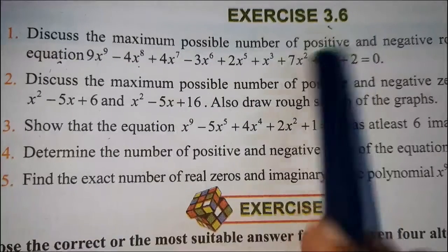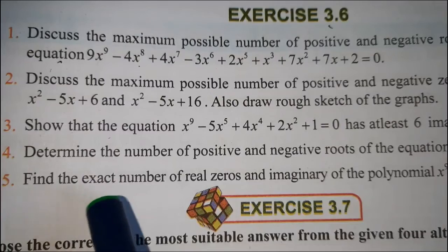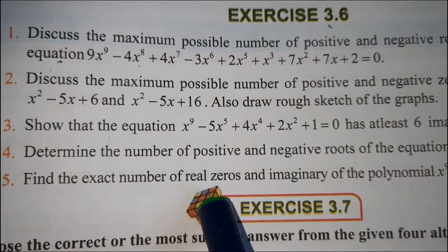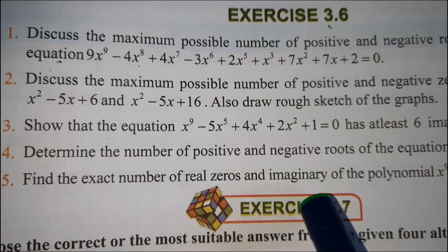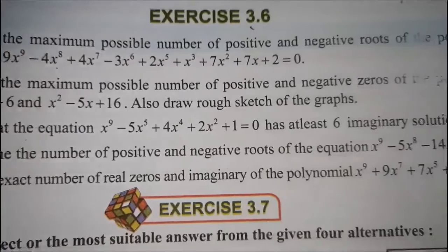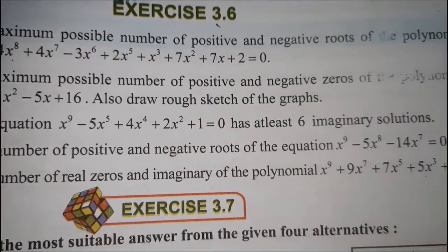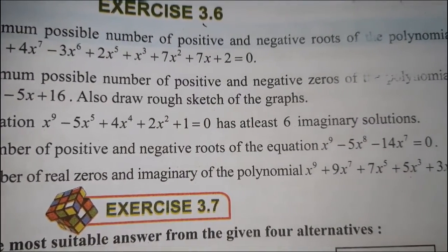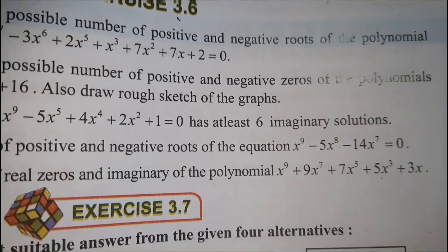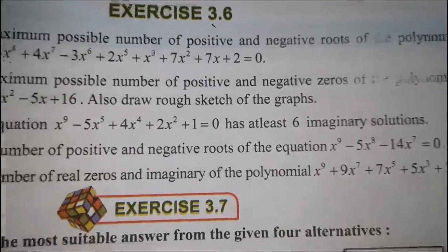Exercise 3.6, Question number 5. Find the exact number of real zeros and imaginary zeros of the polynomial x power 9 plus 9x power 7 plus 7x power 5 plus 5x cube plus 3x.